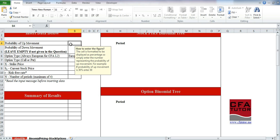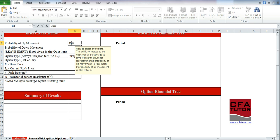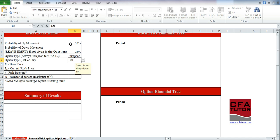So probability of up movement is 30%, and it's formatted as a percent, so you just enter it as this. 23 for down, option type is a call, strike price is $40.